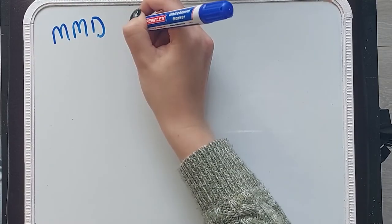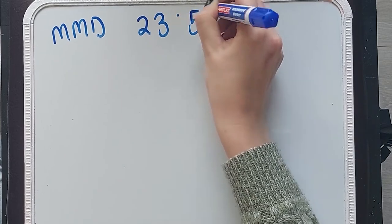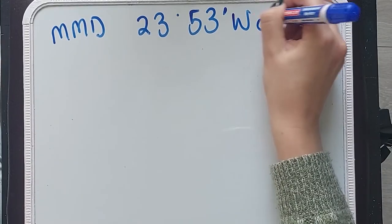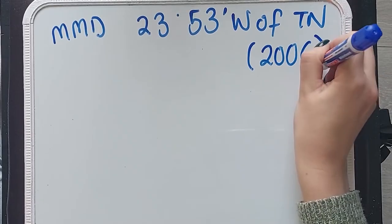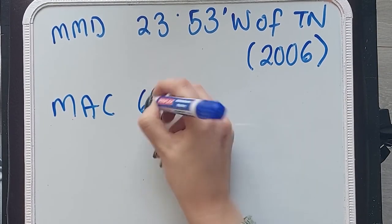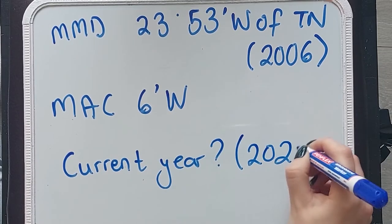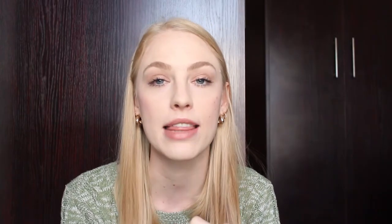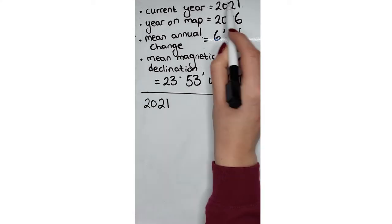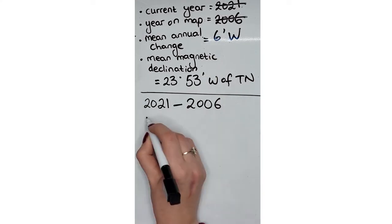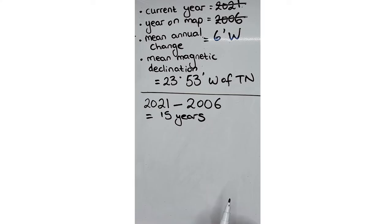I now want to do an example where there are conversions so that you can see what that process looks like. Our mean magnetic declination is 23 degrees and 53 minutes, taken in 2006, with a mean annual change of six minutes westwards, and the question is: calculate the magnetic declination for the current year. Our first step is to find the difference in years: 2021 minus 2006, which gives us 15 years.